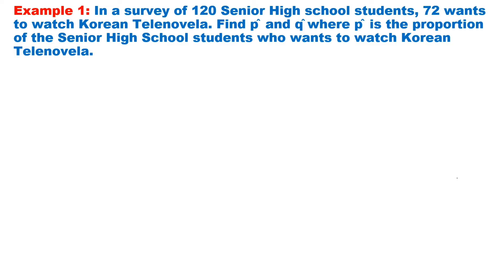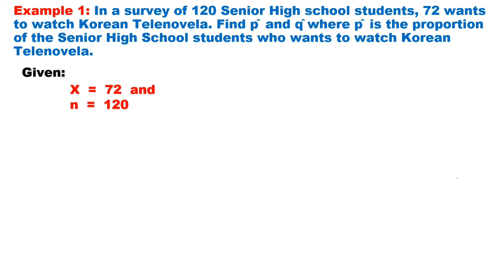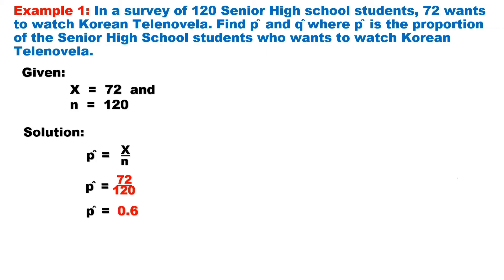Let us apply the above in a problem. Example one: in a survey of 120 senior high school students, 72 want to watch Korean telenovela. Find P-hat and Q-hat, where P-hat is the proportion of senior high school students who want to watch Korean telenovela. From the problem, we have X equals 72 and N equals 120. To solve for P-hat, we will use the formula X over N. Substituting: 72 divided by 120 equals 0.6.